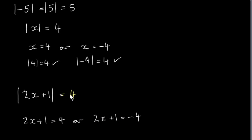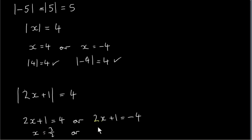So this single equation is actually two equations. Two x plus one equals four gives x equals three over two as one solution. Or two x equals minus five, which means x equals minus five over two is the other solution.